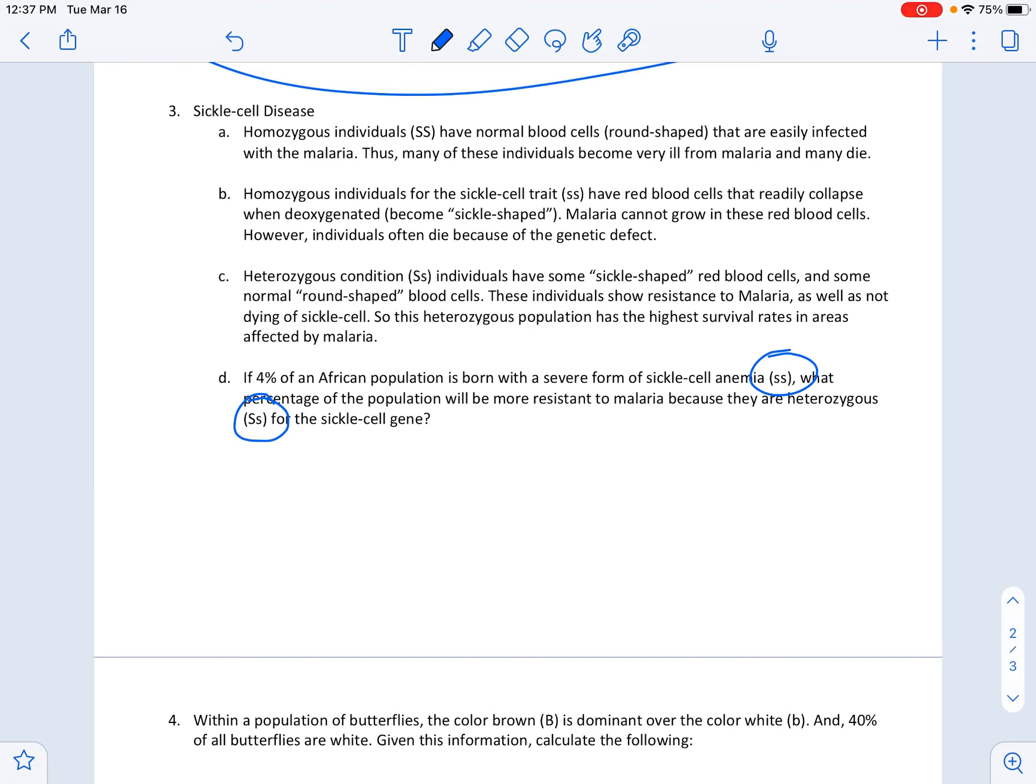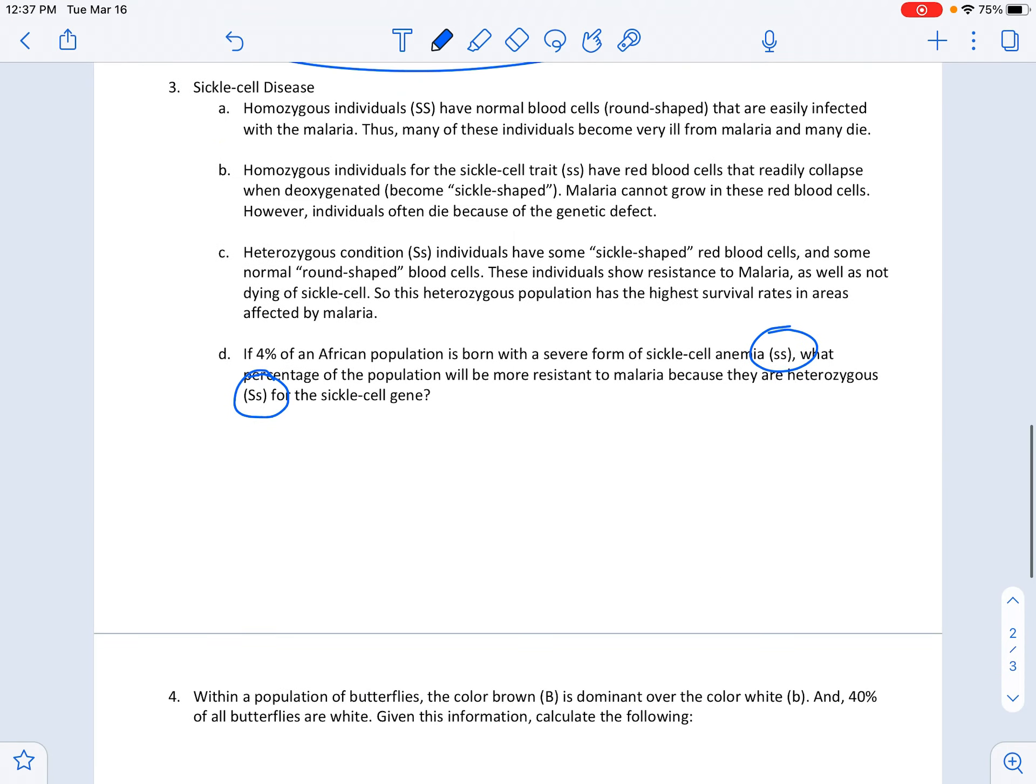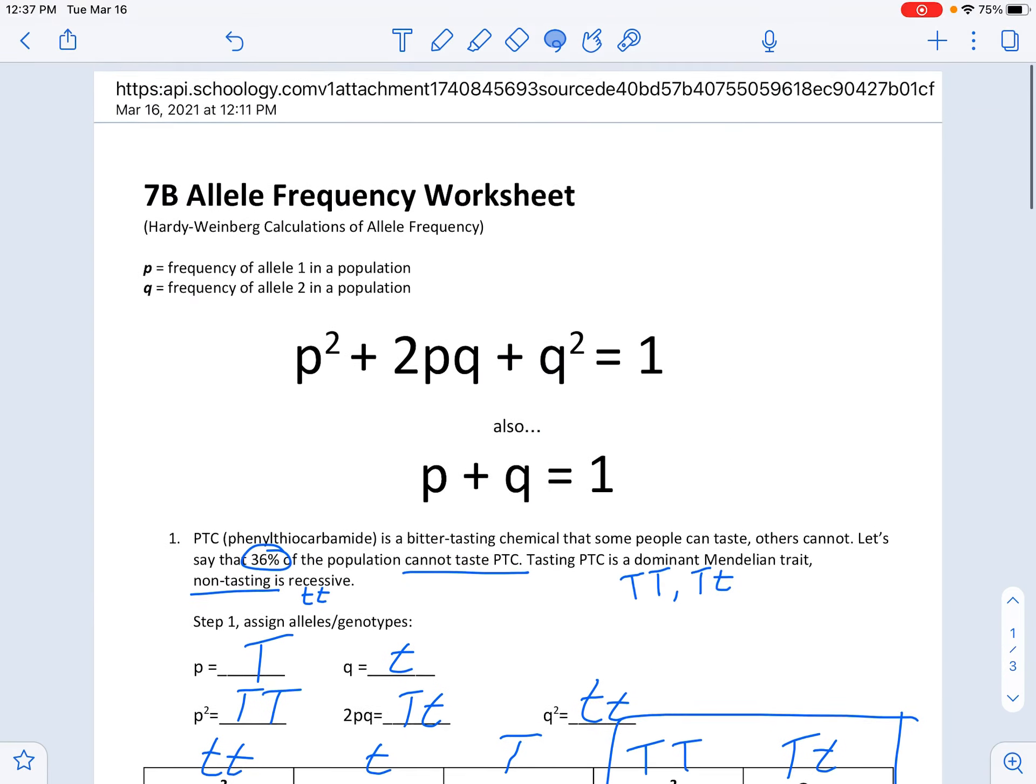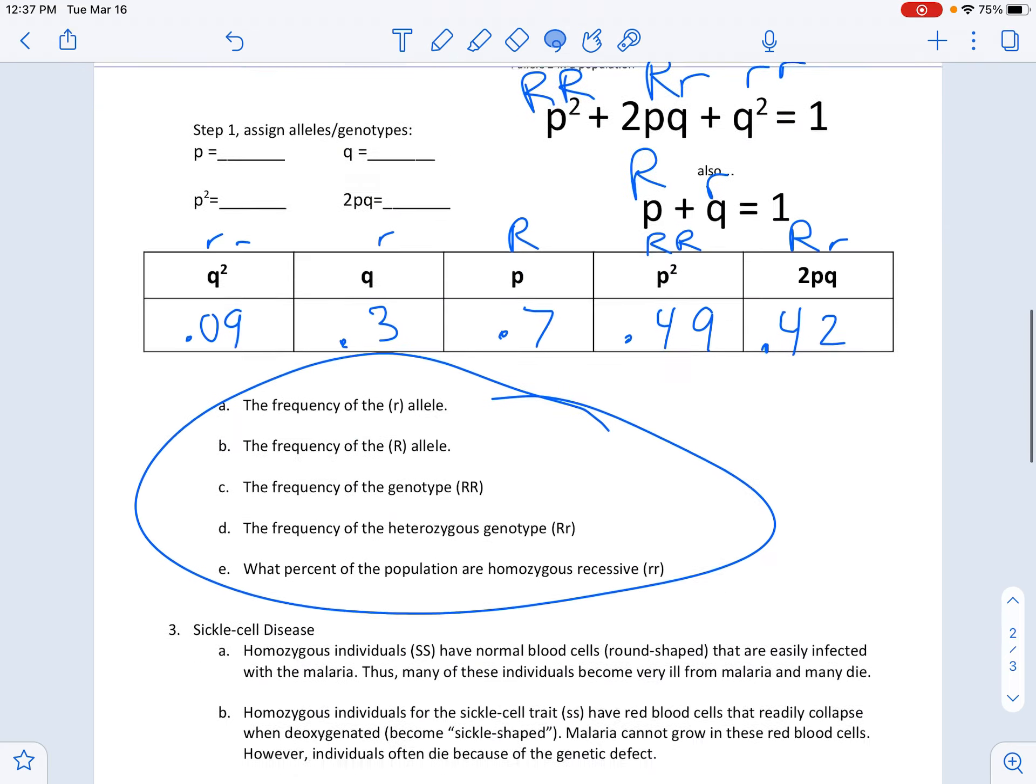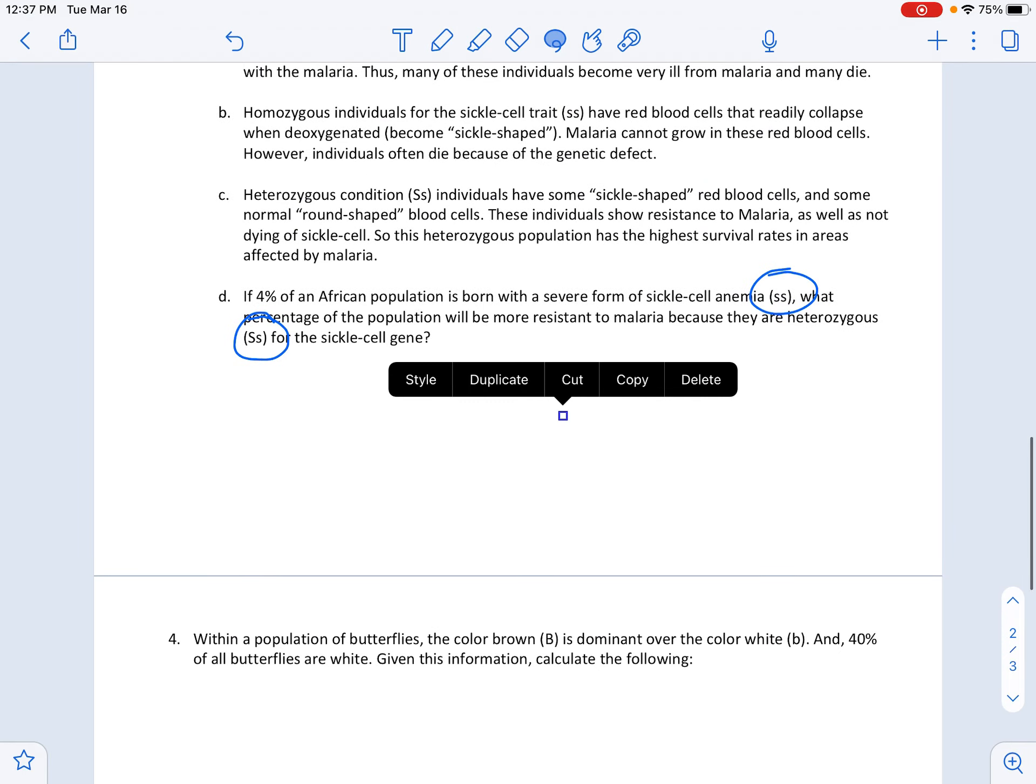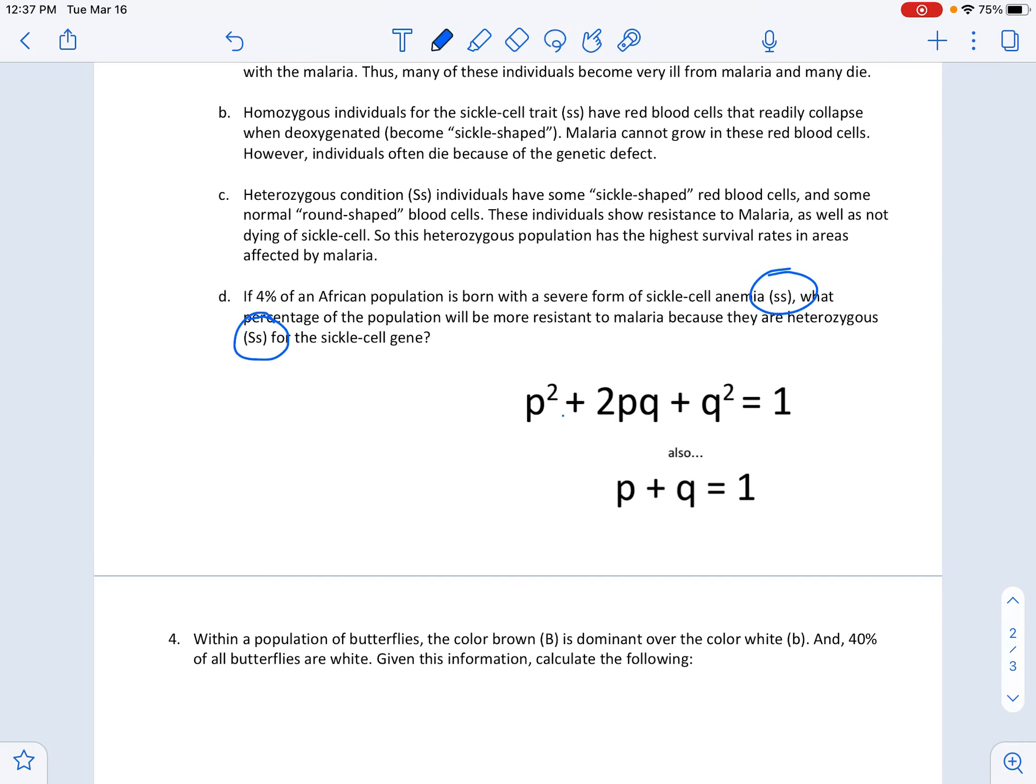And the question says, what percentage of the population will be more resistant to malaria because they are heterozygous? So really, what we're looking for in the equation - let me see if I can copy this here - what we're looking for is we need to know this. Okay, but remember in order to get there, we have to start here and then work our way through the equation and end there.